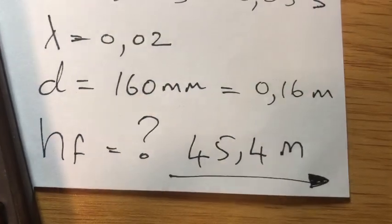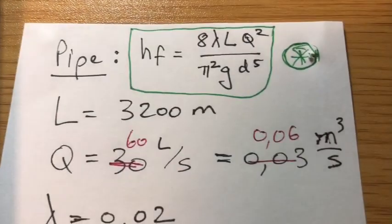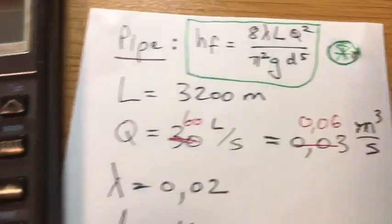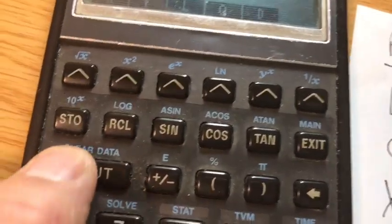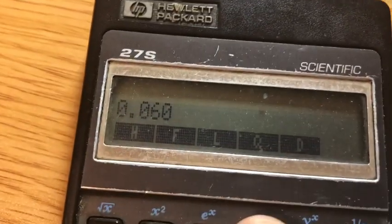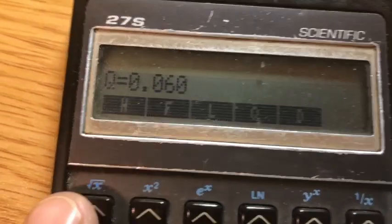So the answer is 45.4 meters in this case. What happens if we change the input value for Q to 60 liters per second? We simply replace the Q value with 0.06 for Q.